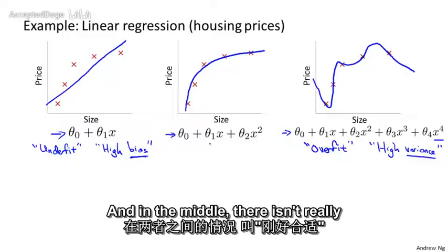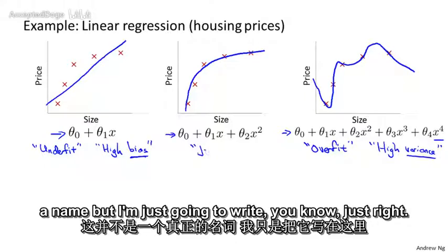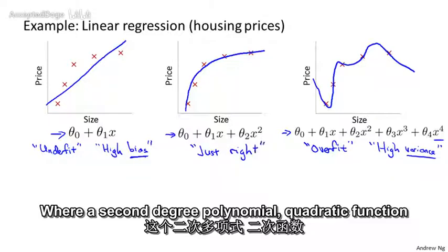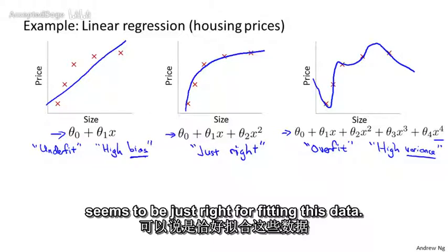So that's called overfitting, and in the middle there isn't really a name, but I'm just going to write just right, where a second degree polynomial quadratic function seems to be just right for fitting this data.